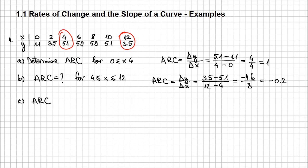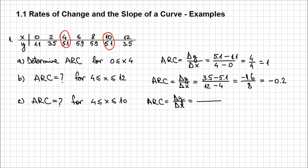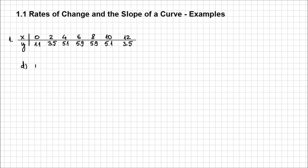Let's calculate one more average rate of change, this time on the interval [4, 10]. I'm going to apply exactly the same method. The average rate of change is delta y over delta x. But if you look in the table, you can already see the y-values for these end points are exactly the same. So delta y is going to be 5.1 minus 5.1 over 10 minus 4, which results in 0 over 6, which is 0. So you can have positive values, negative values, or even 0 for the average rate of change.